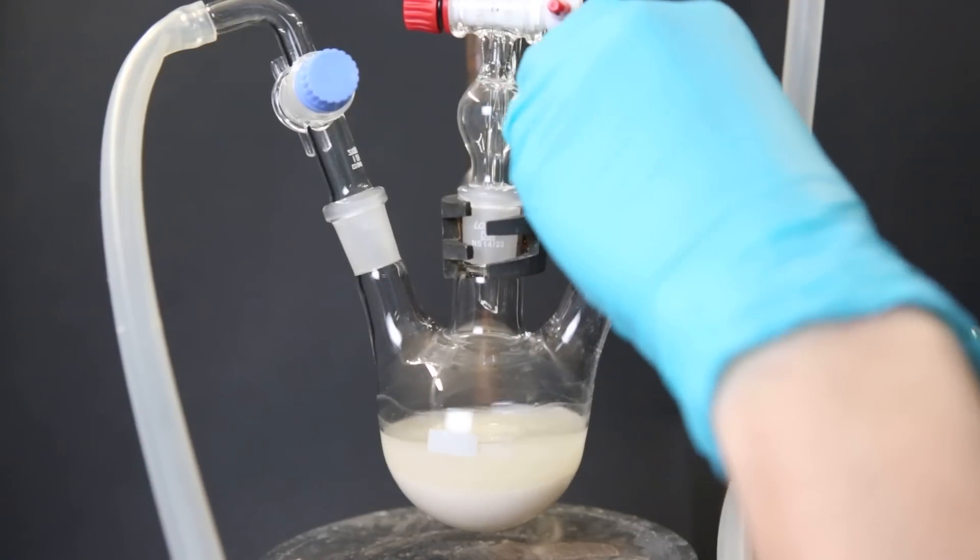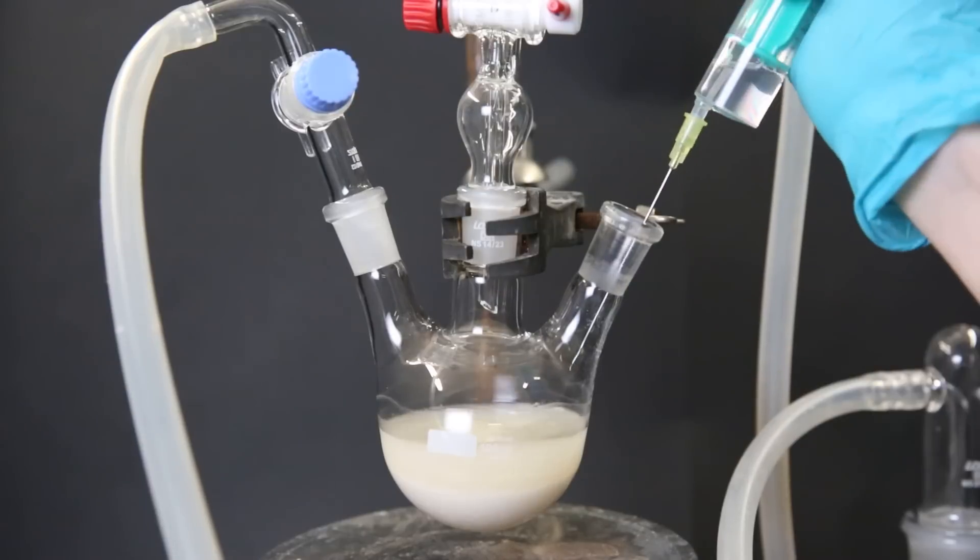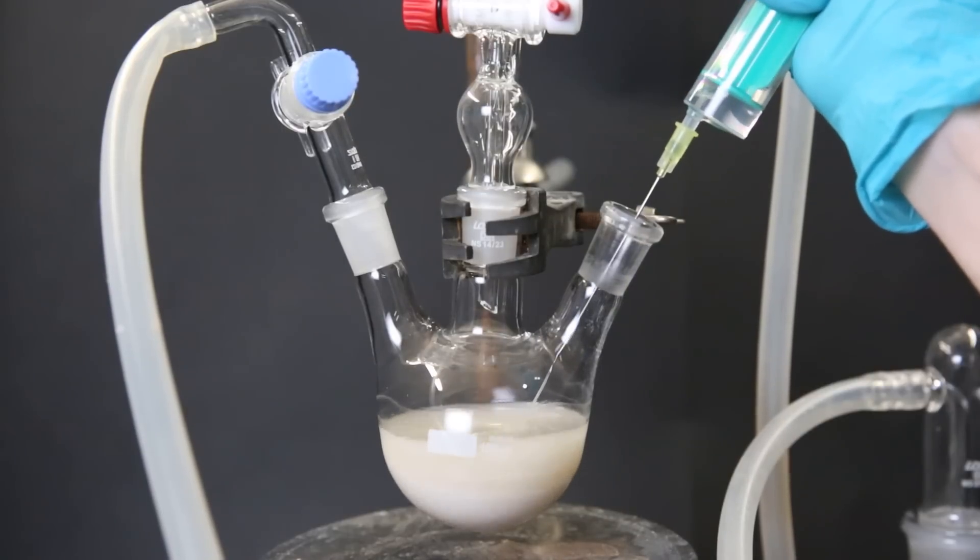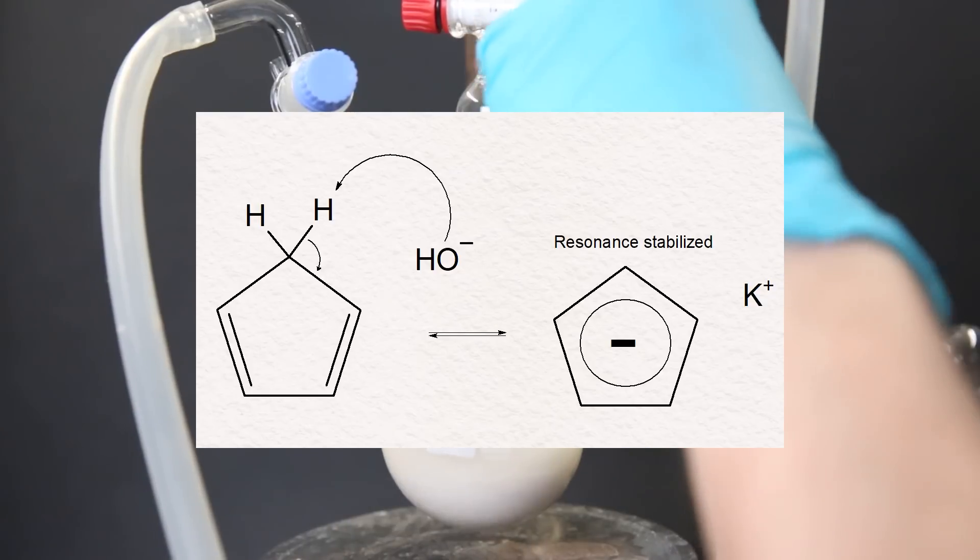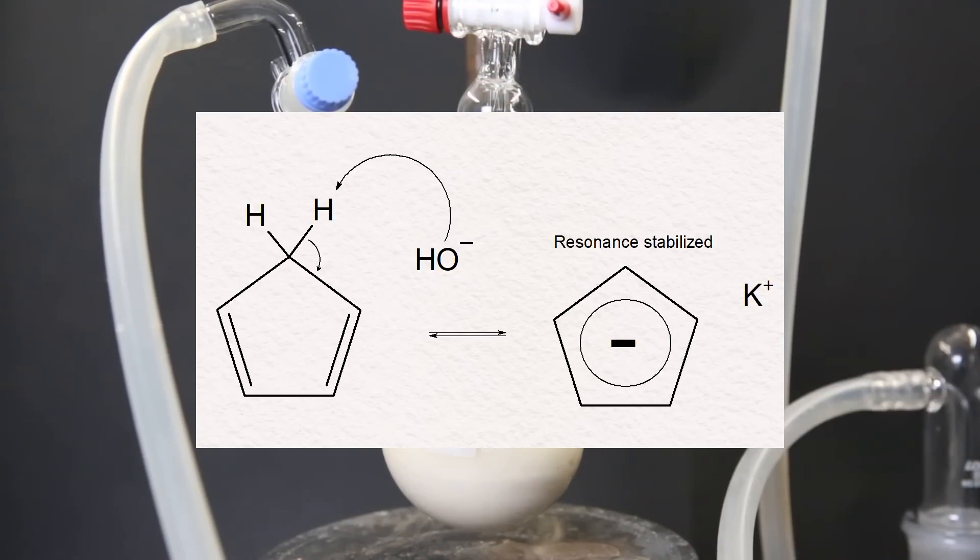Now under continuous argon flow, I add in approximately 4.25 mls of freshly cracked cyclopentadiene. In this reaction, the KOH will deprotonate the cyclopentadiene and form the cyclopentadienide ion, which we can use to make ferrocene.